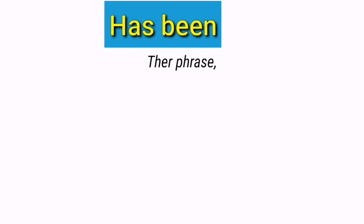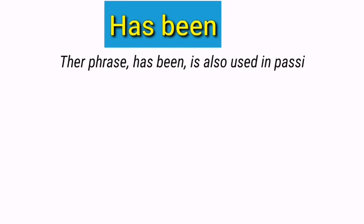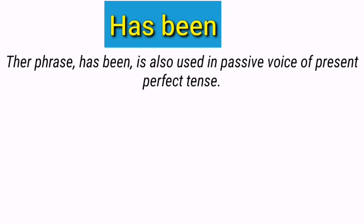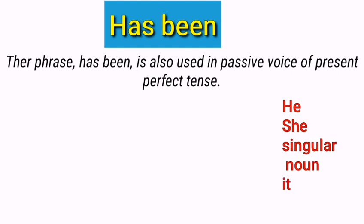The phrase 'has been' is also used in the passive voice of present perfect tense. You should keep in mind that it is used with these subjects: he, she, singular noun, and it. As you know, passive voice is when an action happens to a subject. Just look at these examples.